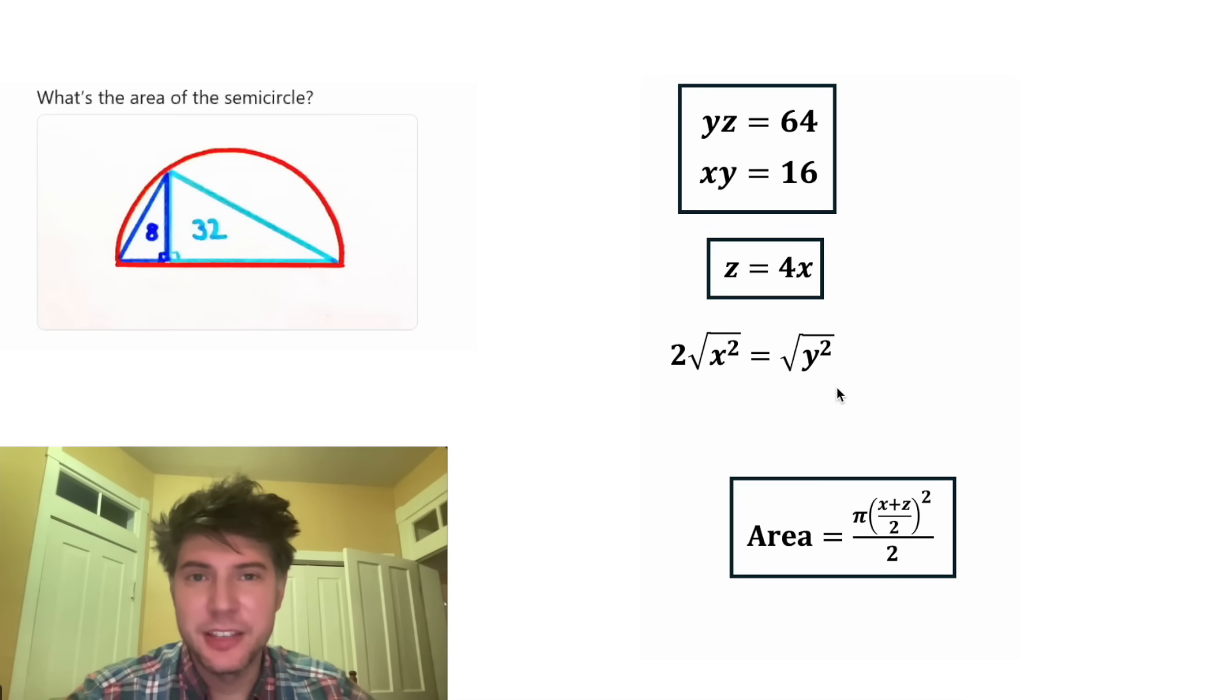Because they're side lengths of our triangles. So since X is positive, the square root of X squared is just positive X. And then since Y is positive, square root of Y squared is just Y. Does that make sense, Y? So now we know 2X equals Y. How exciting. Wait, wait, we're not done yet. Let's put a box around it.